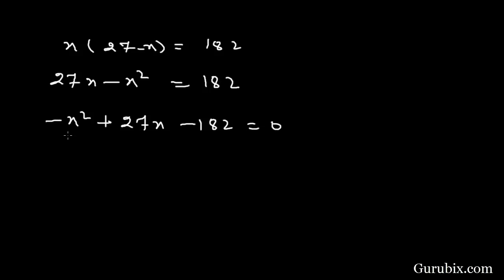Now we multiply both sides by minus 1. Then we have x squared minus 27x plus 182 equals to 0. Now we shall factorize this quadratic equation by using middle term splitting method. For that, first we multiply the first term and the last term.